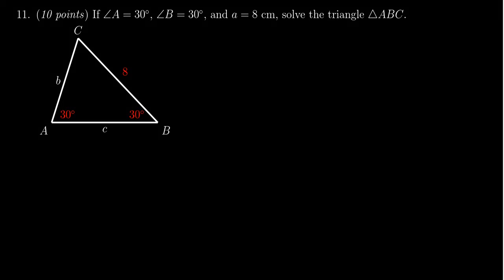In this video, we provide the solution to question number 11 for practice exam number 3 for Math 1060. We're given a triangle ABC and asked to solve for this triangle. The information we know is that angle A is 30 degrees, angle B is likewise 30 degrees, and the side opposite angle A, which we call little a, is 8 centimeters long.